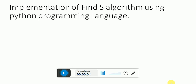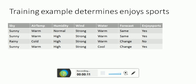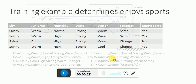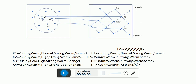This is an implementation of the Find-S algorithm using the Python programming language. This is a training example we are going to consider; there are four instances which explain the concept. The first one starts with h0, so we are trying to go from specific to generic.